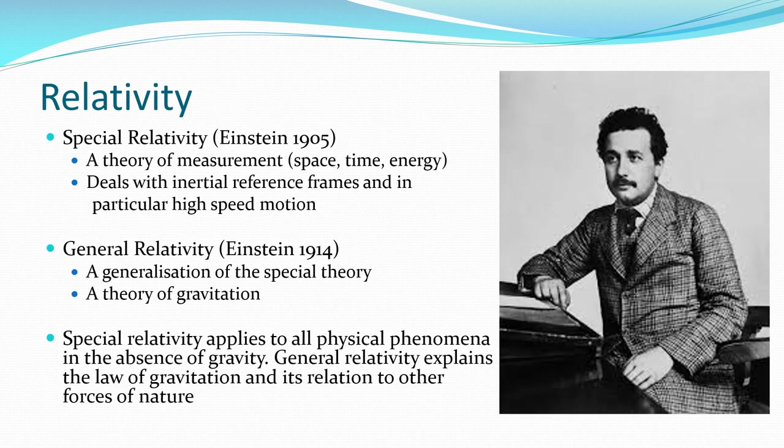So let's talk about relativity and we can thank Albert for that one. In 1905 he had a theory of special relativity which was basically a theory about measurement of things, how we measure space and time and energy with respect to things moving quite fast. It deals with the inertial reference frame that I'll refer to a few times, in particular high speed motion. It was a little bit later in 1914 that he had his theory of general relativity which was a much more encompassing theory that basically involved gravity and included gravity in the whole equation.